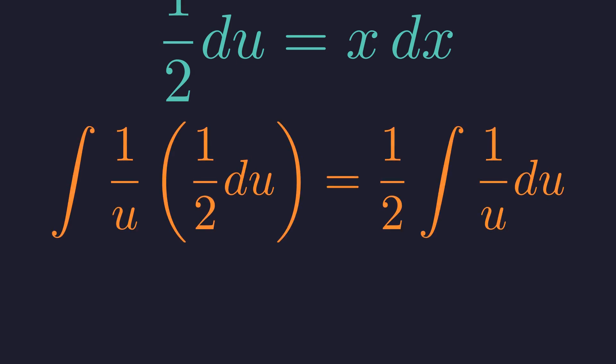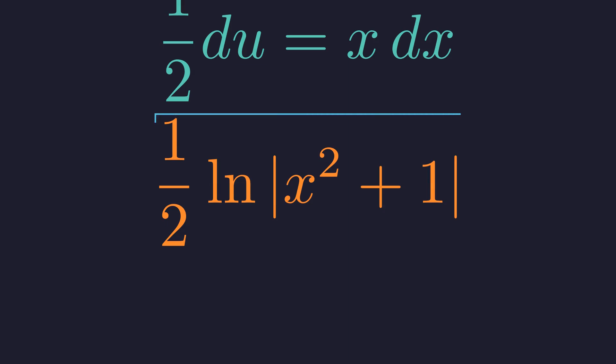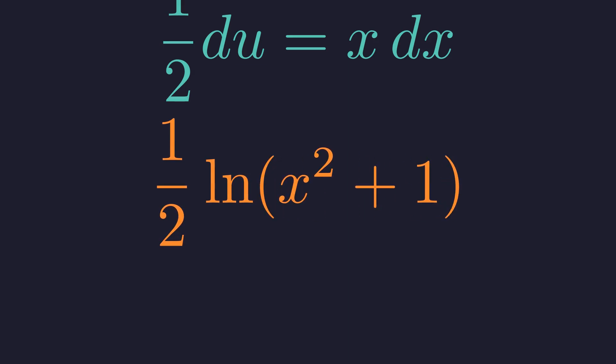This is 1 half natural log of absolute value u. Substituting back, we get 1 half natural log of absolute value x squared plus 1. Now x squared is always non-negative, so x squared plus 1 is always positive. The absolute value bars are redundant. We can drop them.